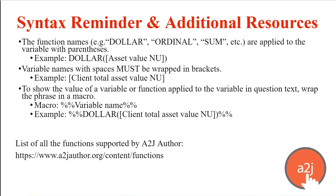A couple of syntax reminders. Function names like dollar, ordinal, and sum are applied to variables with parentheses — you wrap the variable in parentheses after the function name. If you have a variable with spaces in it, you must also wrap that variable in brackets inside of the parentheses. And to show the value of the variable or a function applied to the variable in question text, you wrap that in a variable macro. For example, to display the dollar amount of total assets: %%dollar([total asset variable])%%.